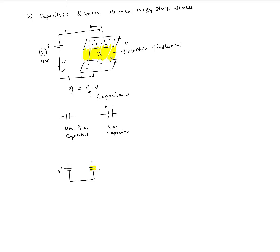Now I'll introduce a switch into the circuit. There's also a resistor and an LED connected in another part of the circuit. When the switch S is closed, the capacitor gets fully charged after a while, but there is no current flowing through the LED because the switch is closed in that branch.